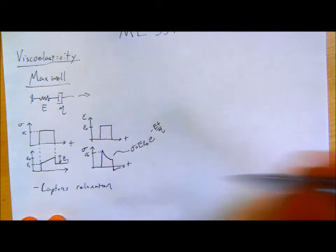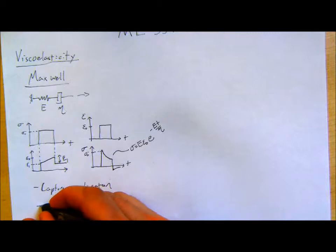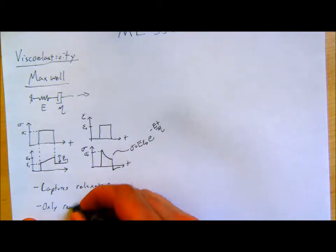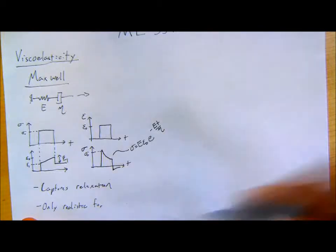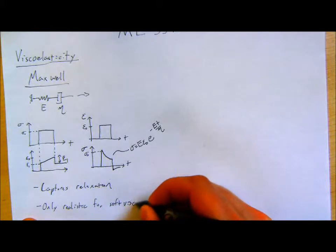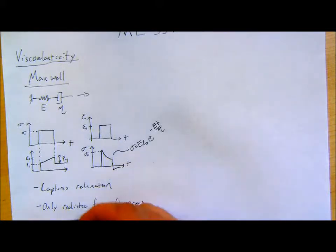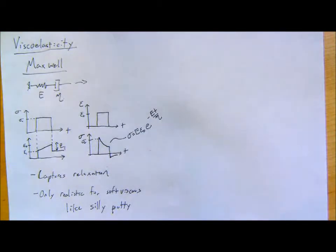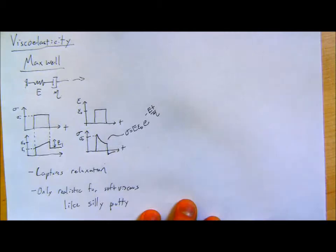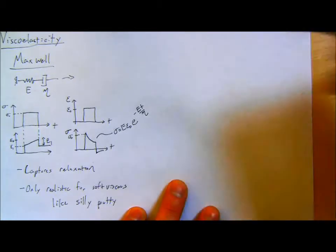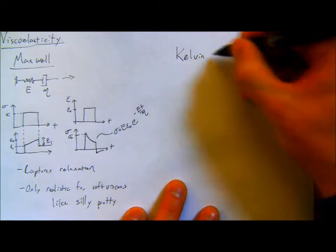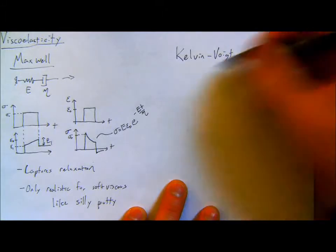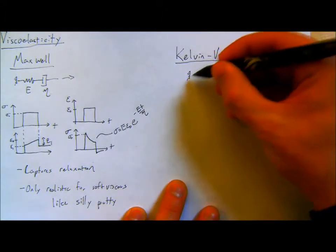The Maxwell model is only realistic for very soft, viscous materials like silly putty, tar, molten metals, or molten glass. That's where the Maxwell model would actually come in useful from an engineering standpoint. The other model we had was the Kelvin-Voigt model, which takes a spring and a dashpot combined in parallel.